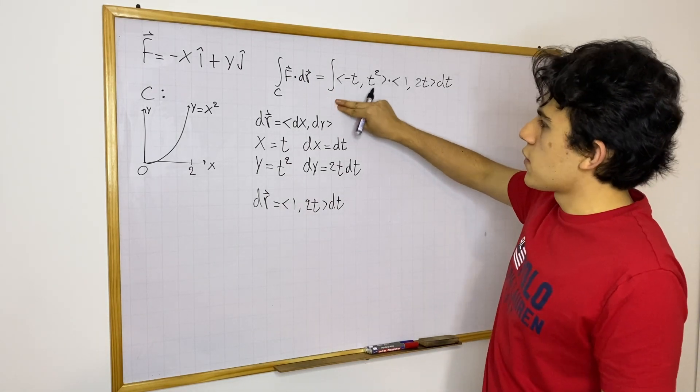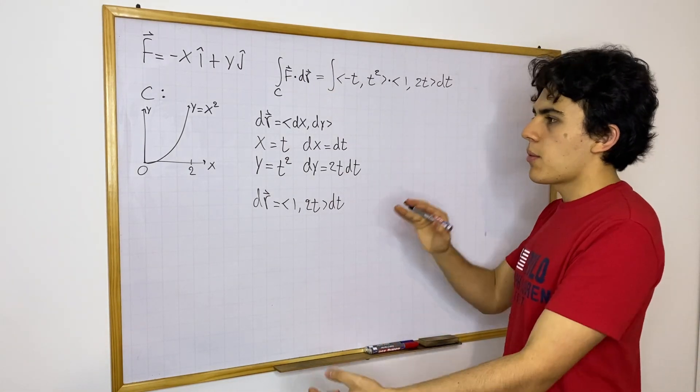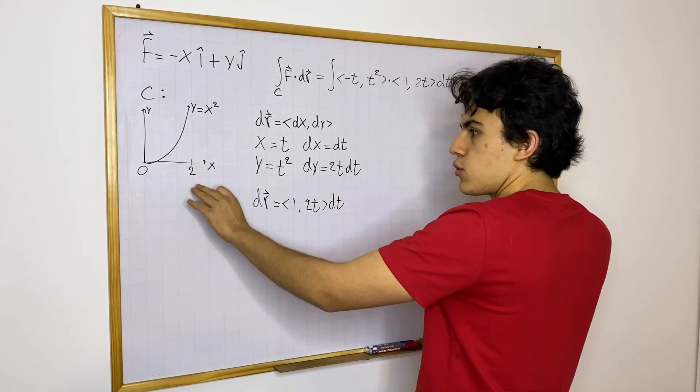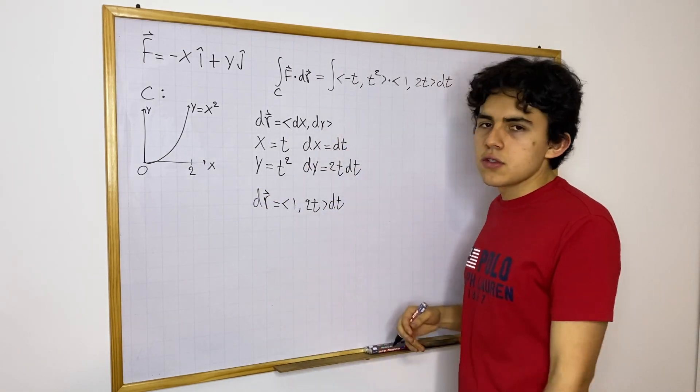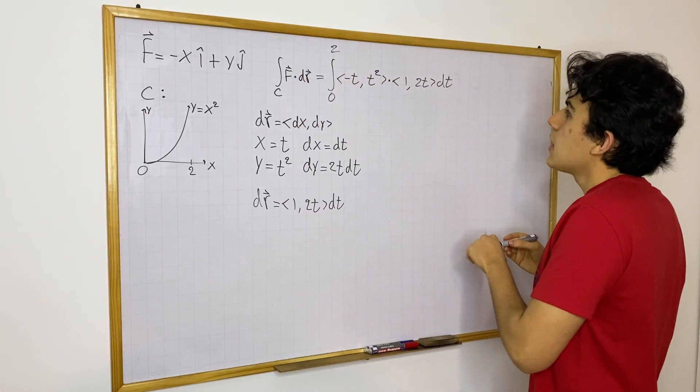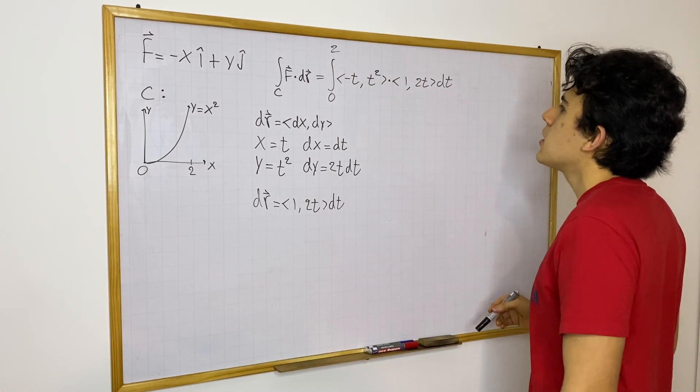And now, instead of saying we have a curve t, I'm just going to put in the parameters that we have for t. So we know that x ranges from 0 to 2, which also means that t ranges from 0 to 2. That is very simple. And then we just solve this as a normal integral.